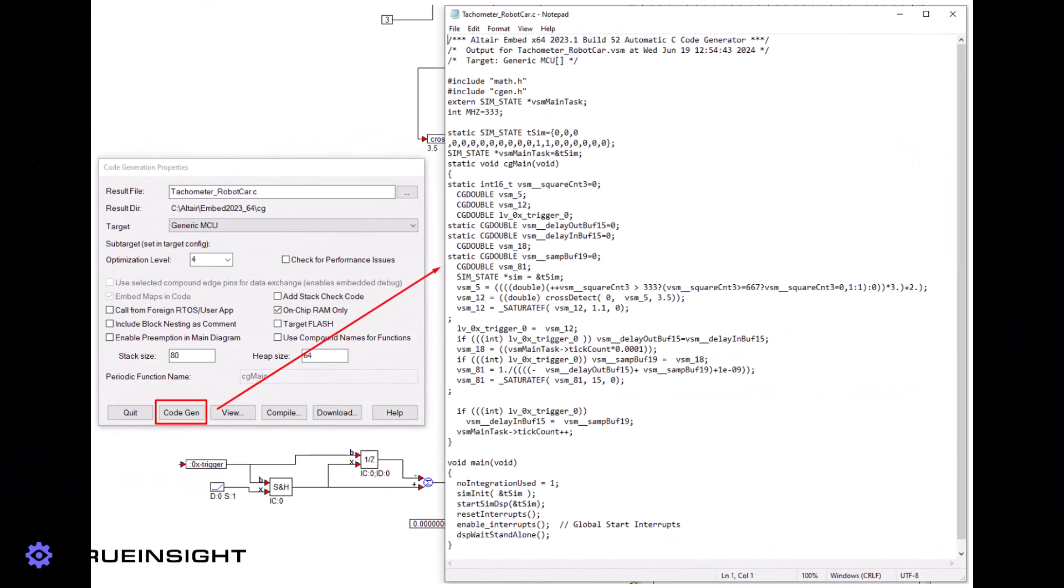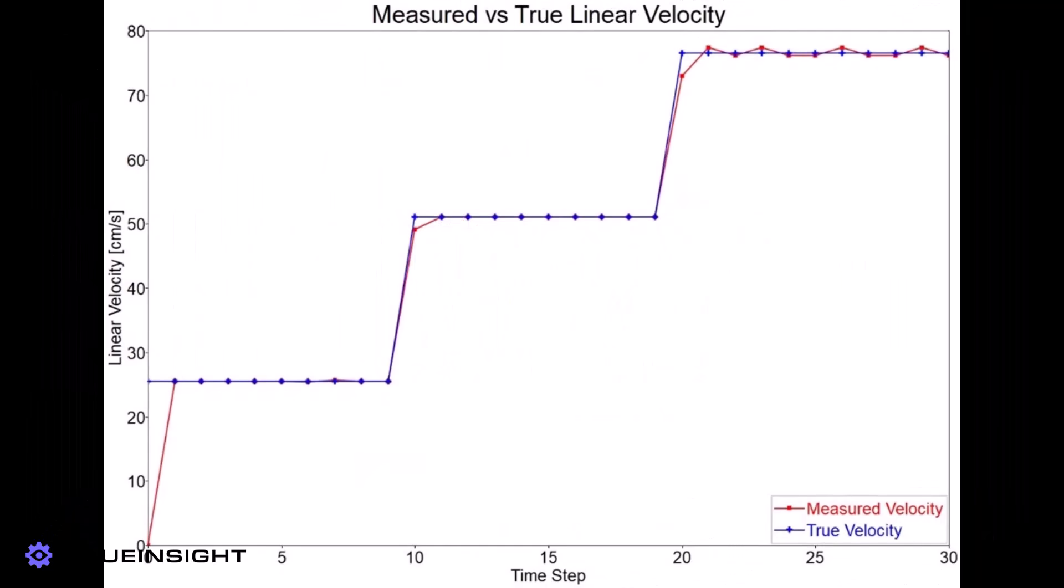Once we were satisfied with our motor subsystem design, we were able to automatically generate the code for our microcontroller and directly load it onto the robot car. Initial testing showed us that we could reliably measure speed.